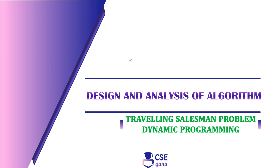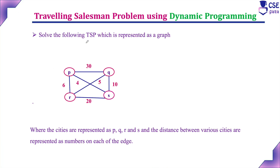In this session, we will discuss the Traveling Salesman Problem using a dynamic programming approach as a simple method. The problem is to solve a TSP represented as a graph where the cities are represented as P, Q, R, and S, and the distances between various cities are represented as numbers on each edge. The graph has four vertices, that is four cities, with their corresponding distances given.